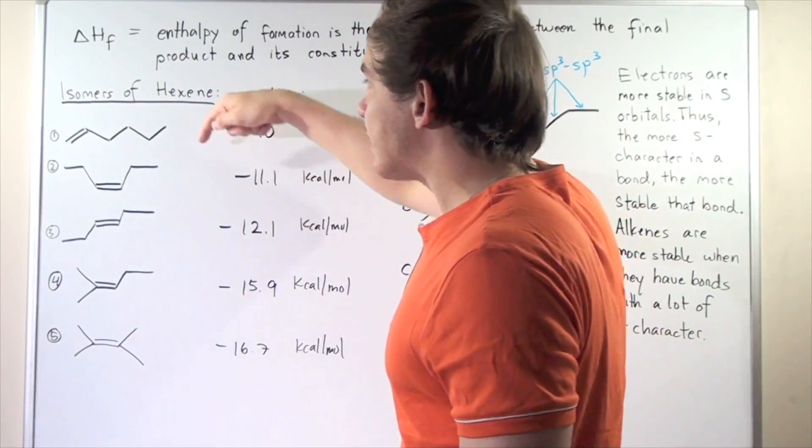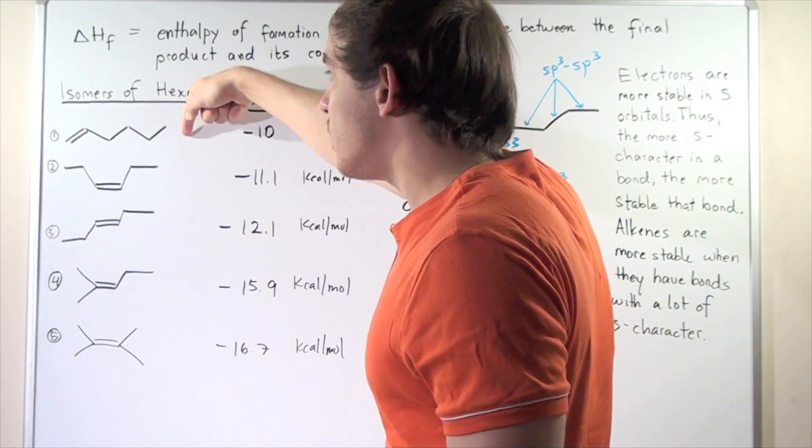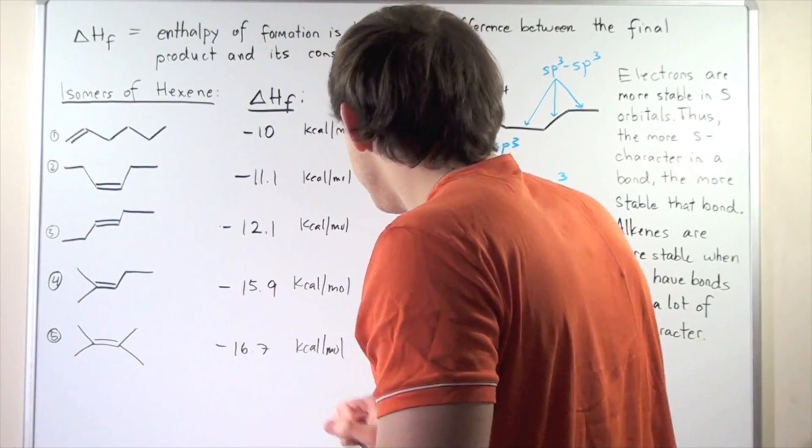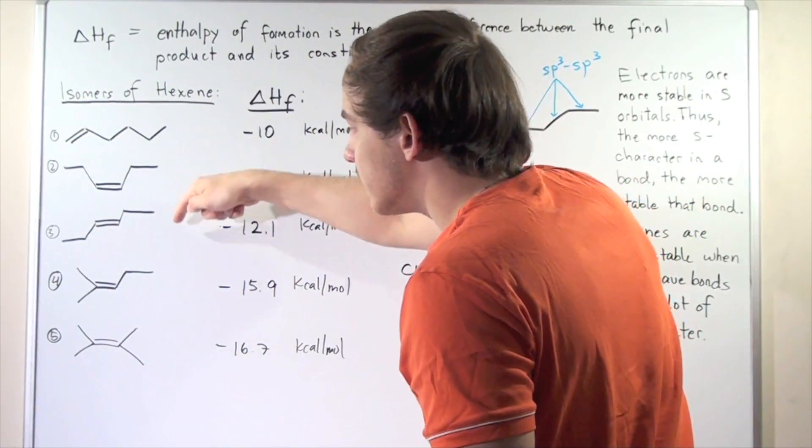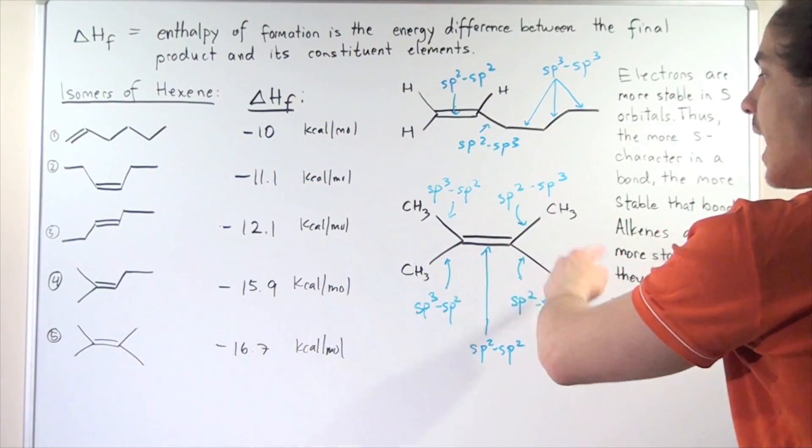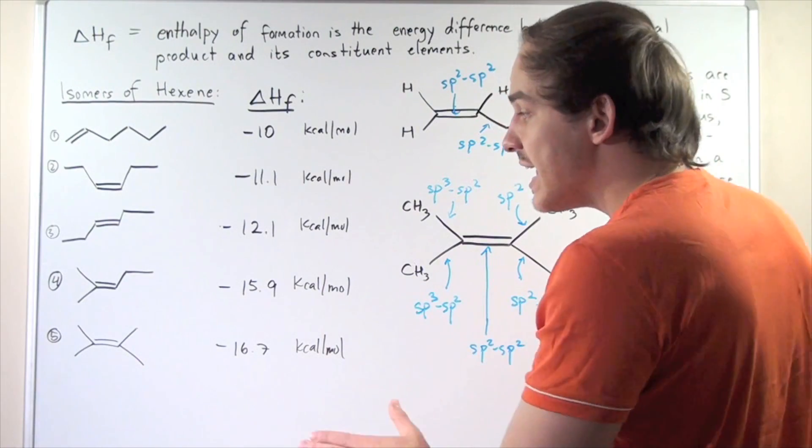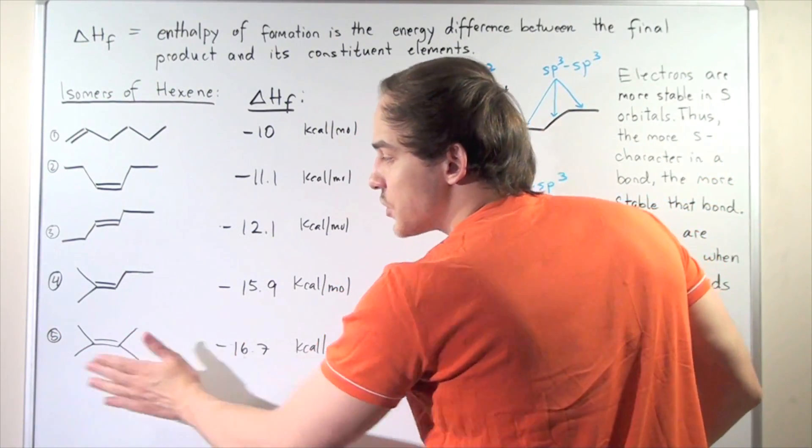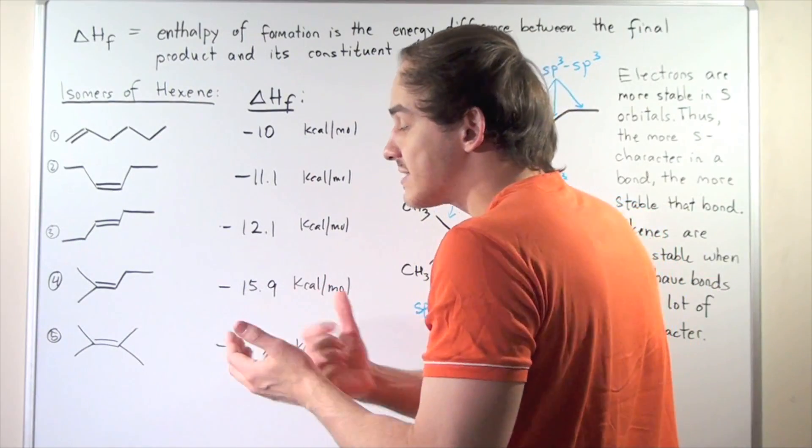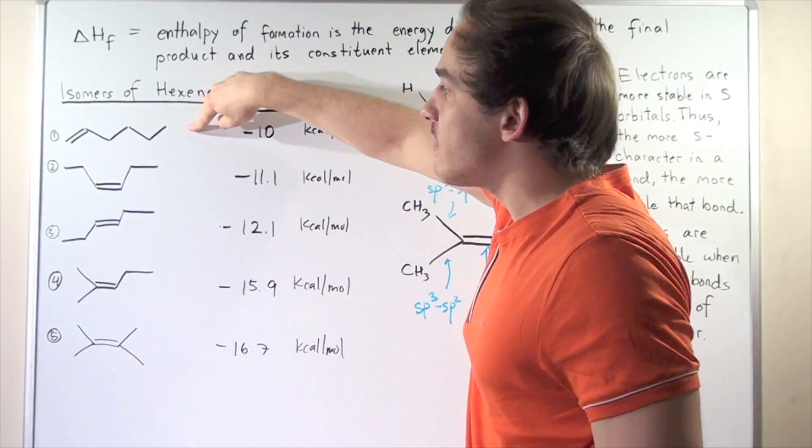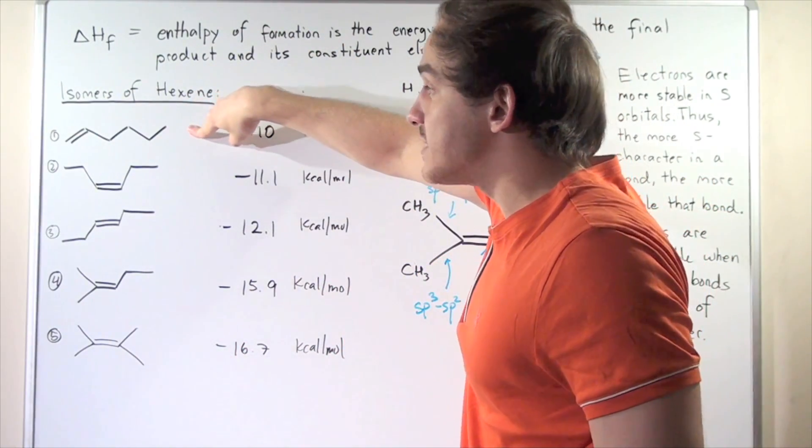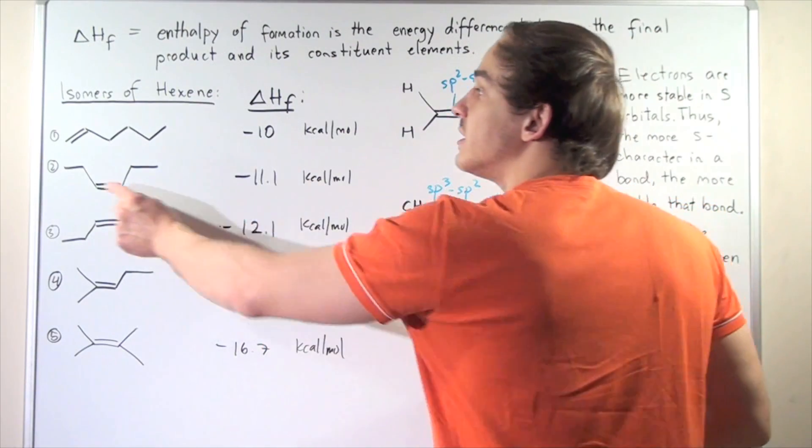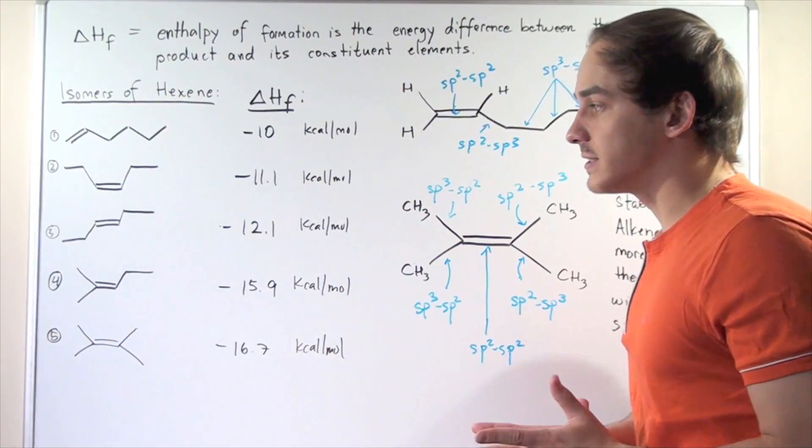So in other words, the reason that we become more stable as we go down the list is because as we go down the list, our bonds increase in strength. Here we have our strongest bonds because we have most s character or more s character. And here we have the least stable compound or isomer because we have the least amount of s character.